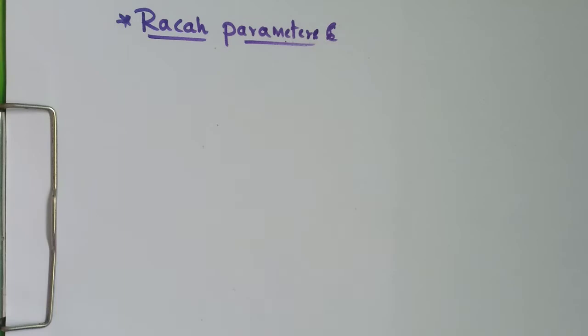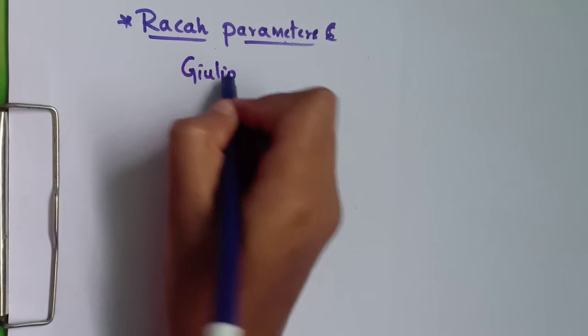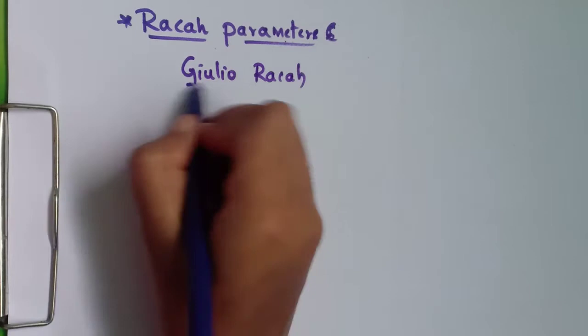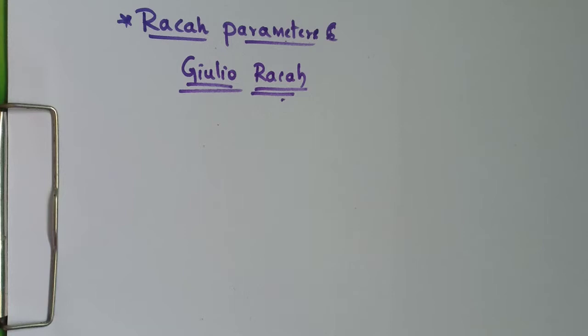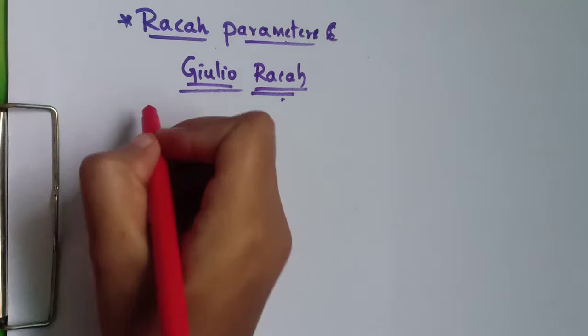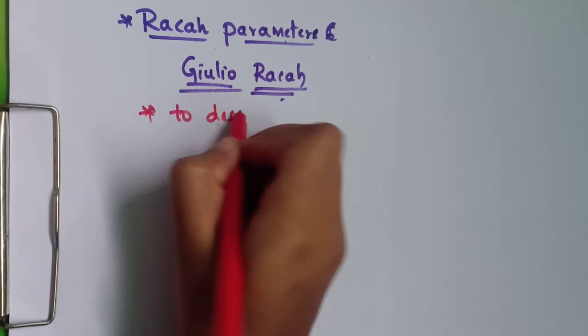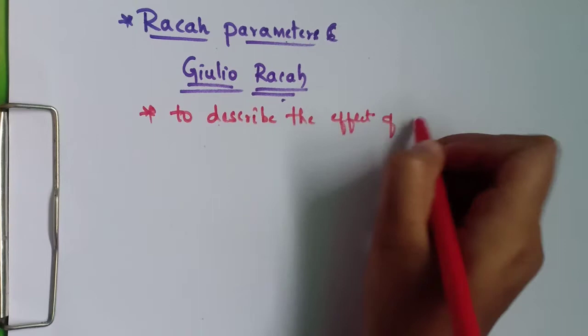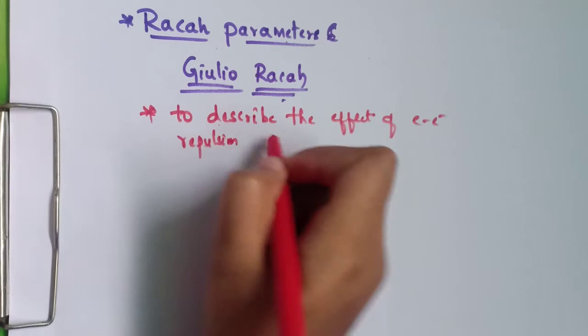Now let's learn about the Racah parameters. Racah parameters are named after the physicist and mathematician Racah. These parameters were generated as a means to describe the effect of electron-electron repulsion within metal complexes.